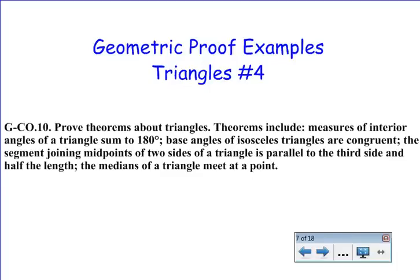For this example, we're going to move on from just proving triangles congruent to showing that because triangles are congruent, that means other things about our picture. We're going to use CPCTC, which means corresponding parts of congruent triangles are congruent, to help us prove some things.